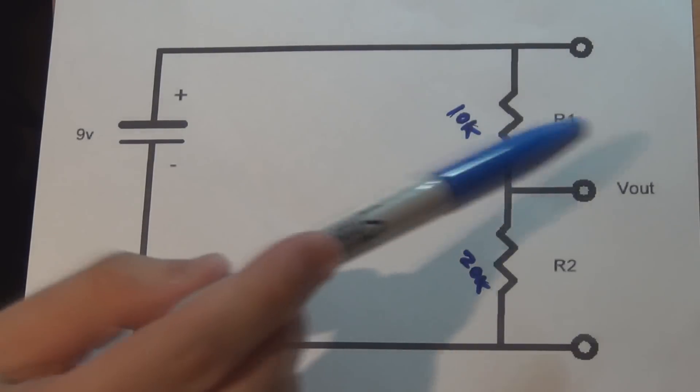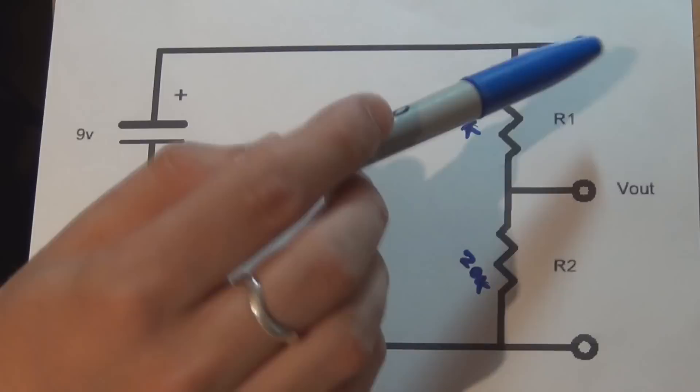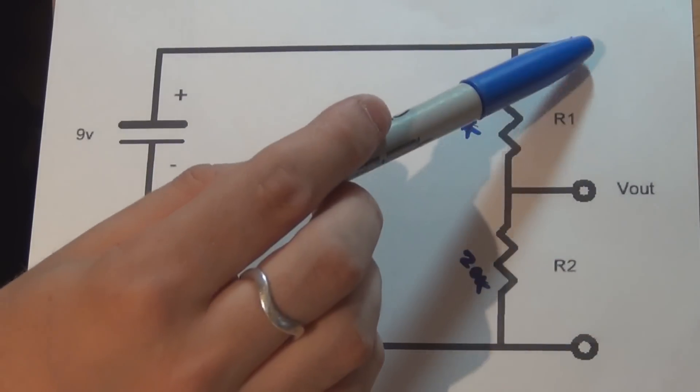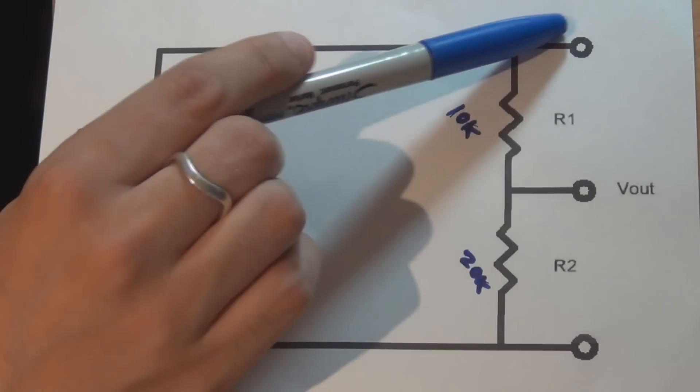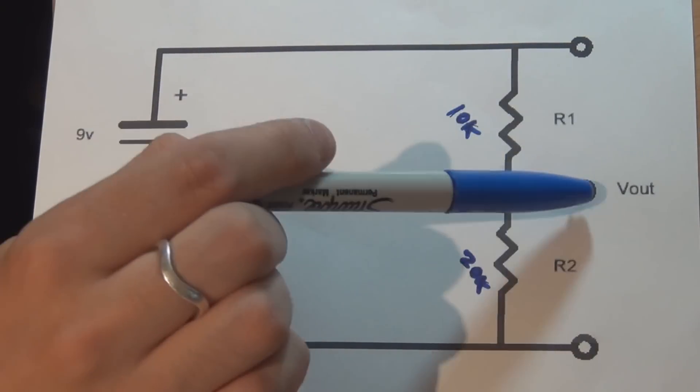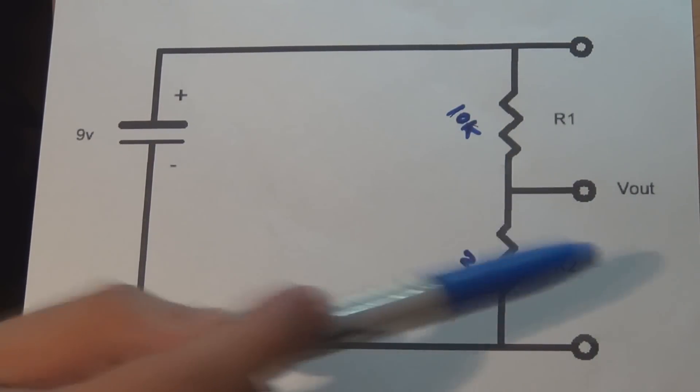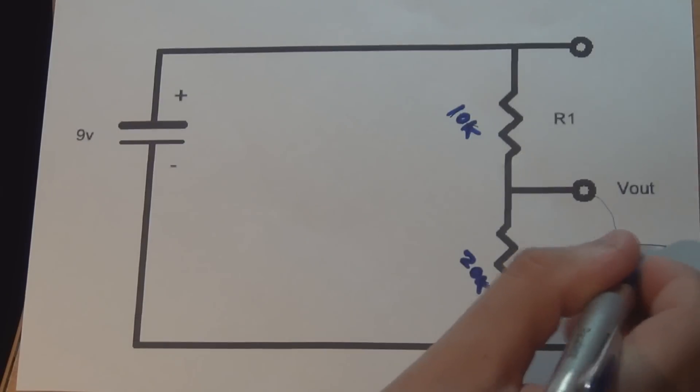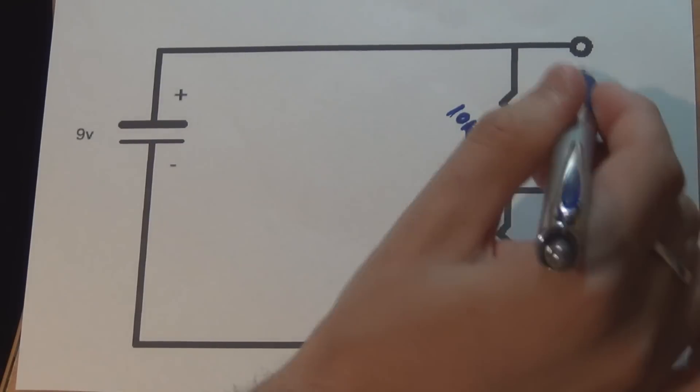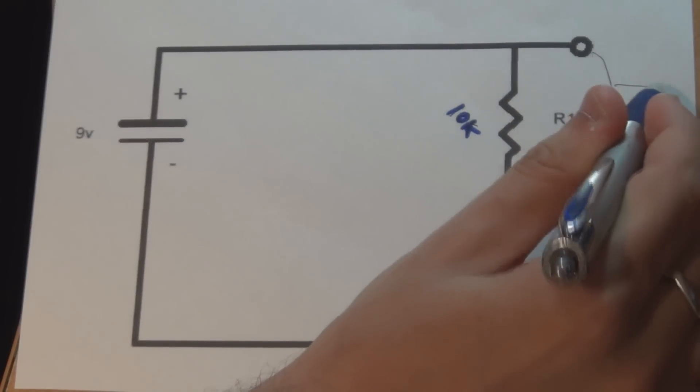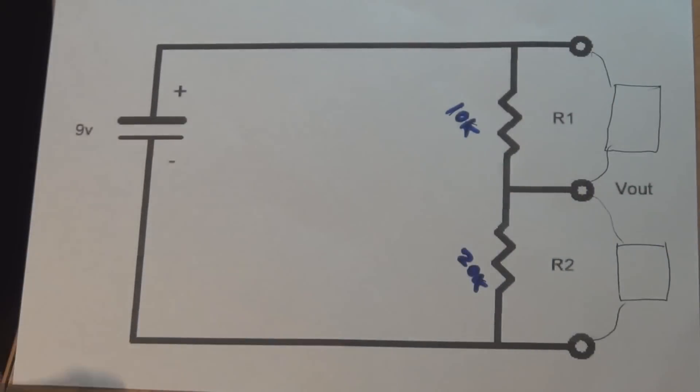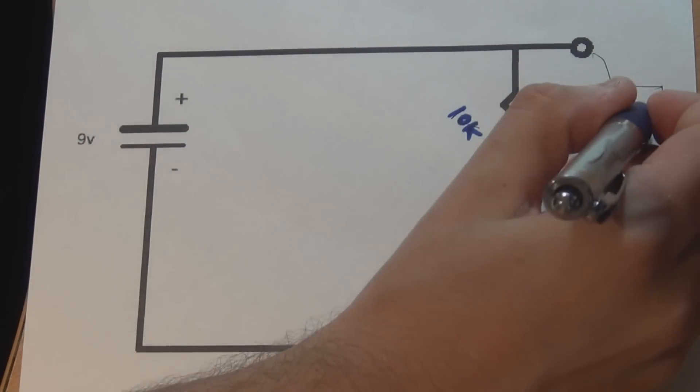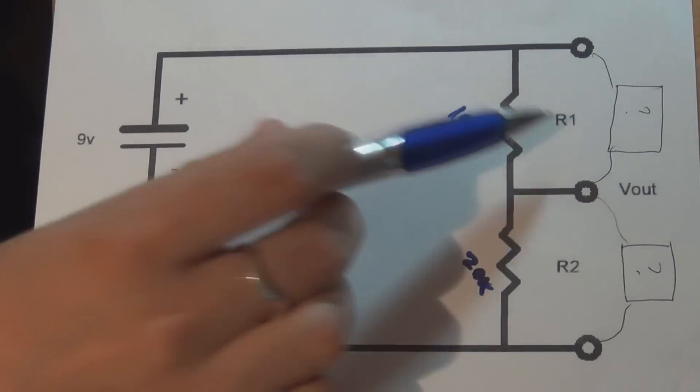What would be the voltage if you placed a multimeter from the top terminal to Vout, and what voltage would you get on the 20k resistor? I'll draw in the multimeters so you can see what I'm talking about. What would be the two values we would get on these multimeters on R1 and R2?